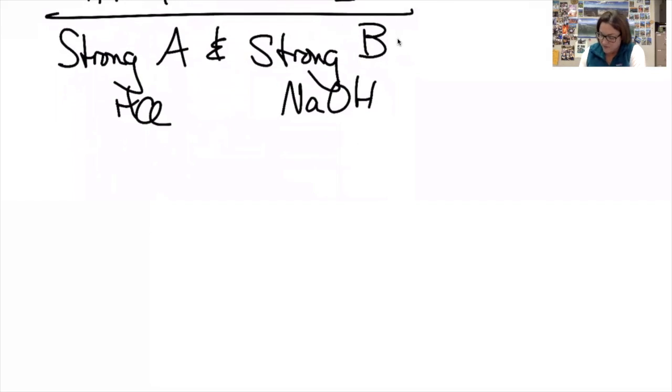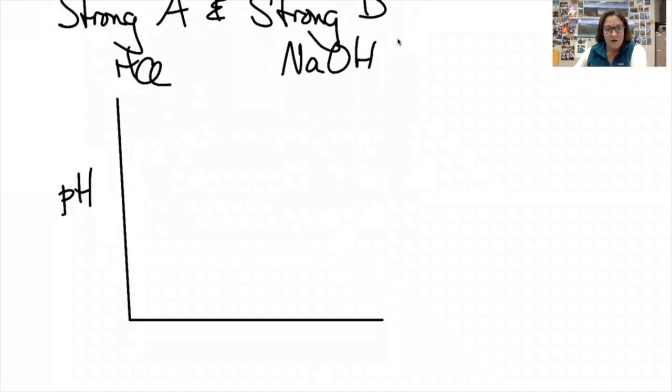What a titration curve will typically show is on the y-axis we will have pH, on the x-axis we will have something like volume of base added. It is usual to add the base to the acid rather than the reverse.